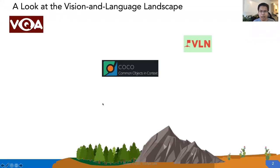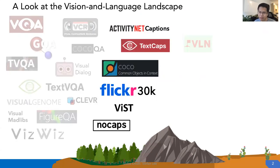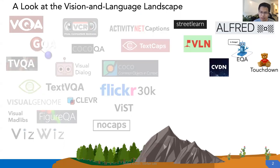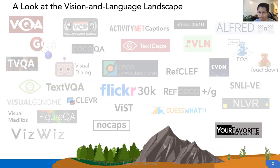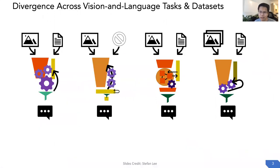Vision and language is a very active area in the last few years, and we've seen a huge number of new tasks. Looking at the vision and language landscape, we can see tasks such as visual question answering, image captioning, vision and language navigation, refer expressions, and multi-modal verification. This is still an incomplete list, so your favorite task might not be mentioned here. With the divergence across different vision and language tasks, what we usually do is develop different models for different datasets or tasks.